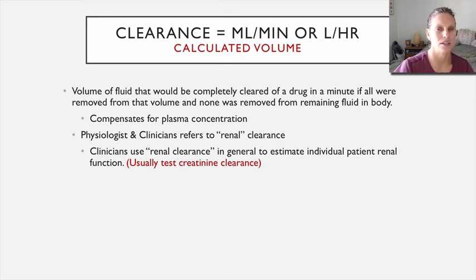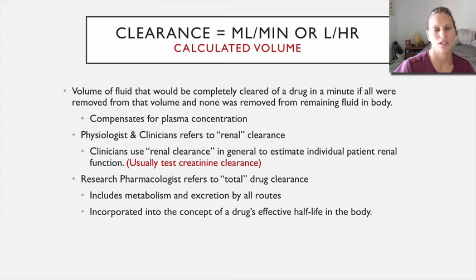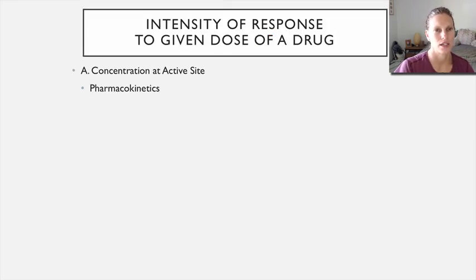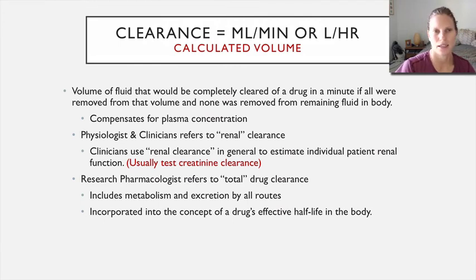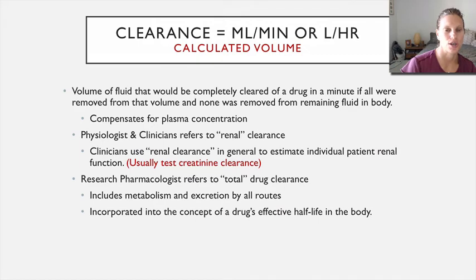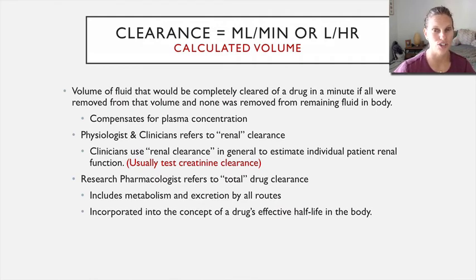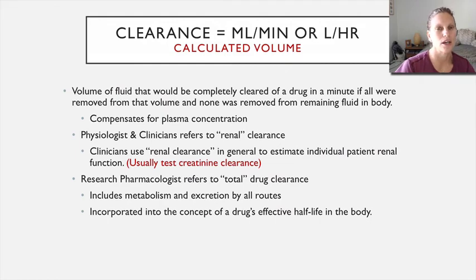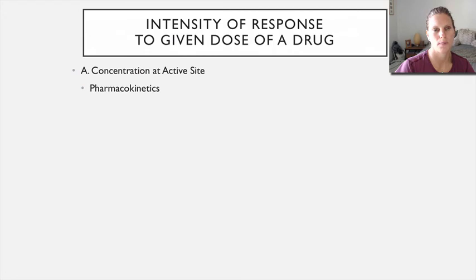In clinical practice, we estimate clearance through the kidneys using a test called creatinine clearance. Research pharmacologists refer to total drug clearance including all metabolism and excretion routes, but clinically renal clearance is most applicable. The utility: if a patient's creatinine clearance is altered, you can predict whether they are losing drug too quickly or retaining it — which is especially relevant when managing patients with kidney disease.